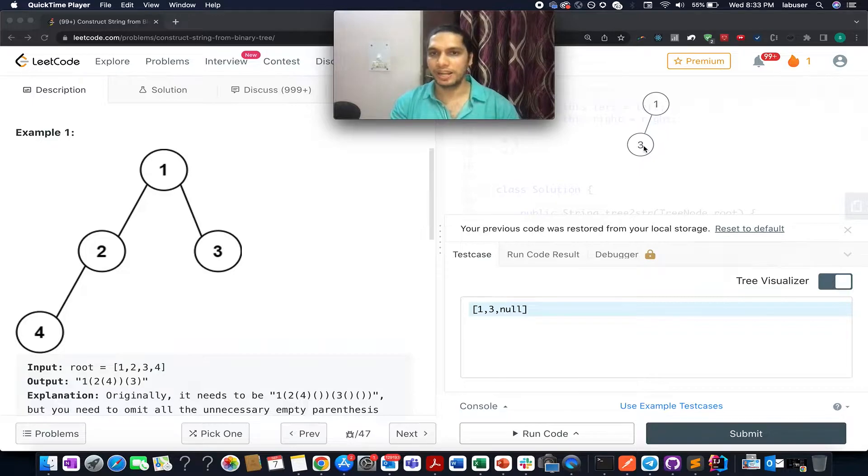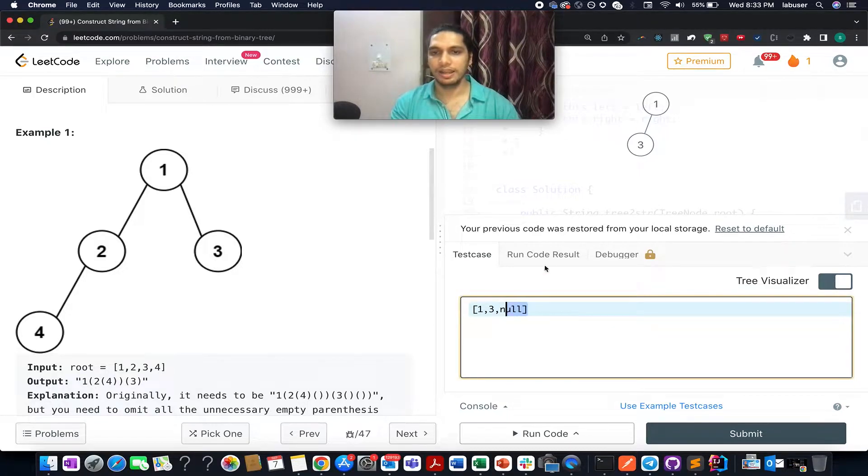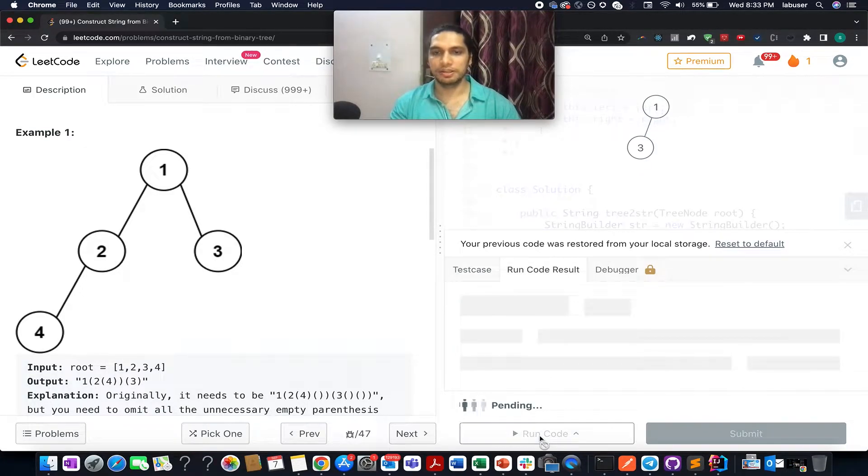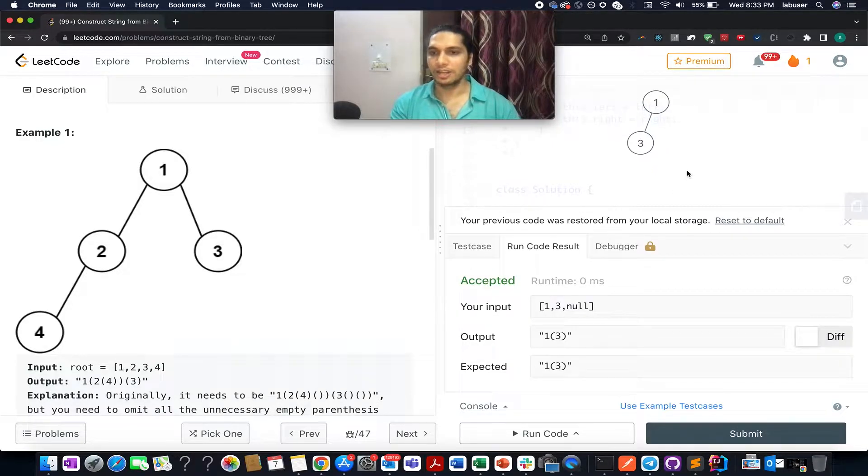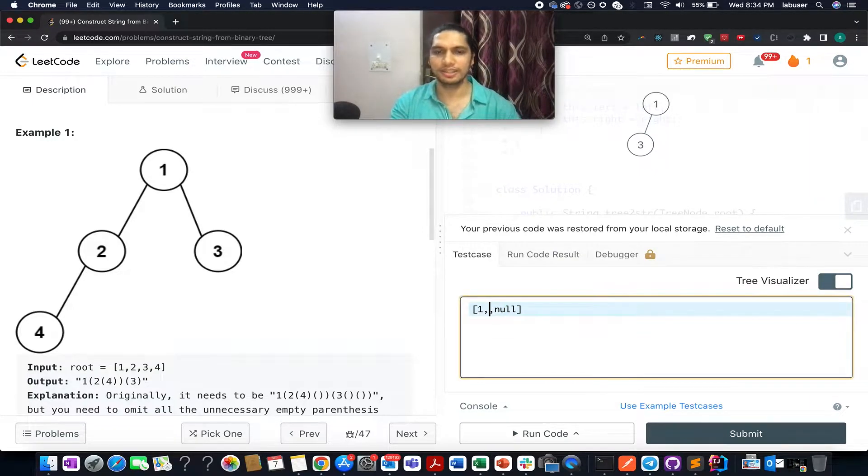Let me just run this code and the output is something like this. Let me just open the tree visualizer. This is the tree that is given to us - we have the root of the tree as 1, we have only one element in it which is a left child of that root, and the value here is 3.